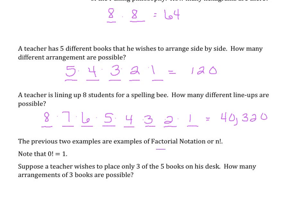The previous examples are what we call factorial notation — N with an exclamation point. Notice how we start at the number and go down multiplying each subsequent number: five, four, three, two, one. We can do this with any single number. So six factorial is equivalent to six times five times four times three times two times one, and we could do that for any specific number.